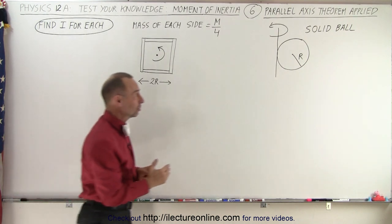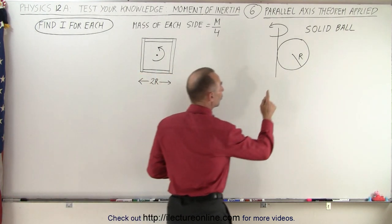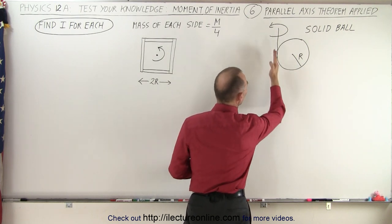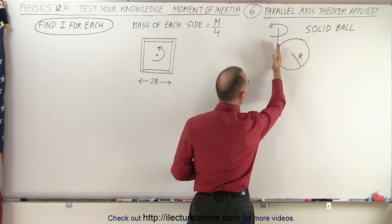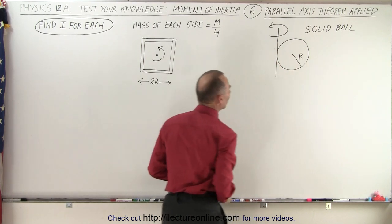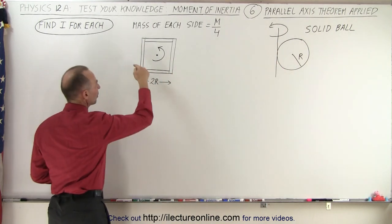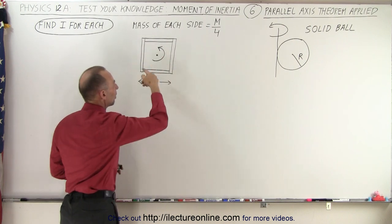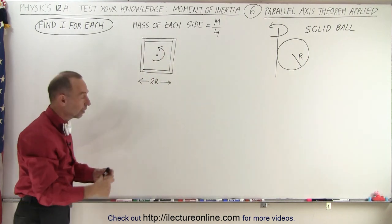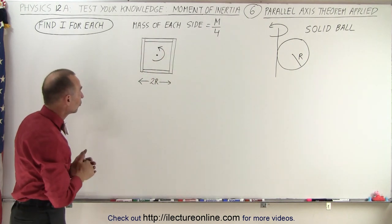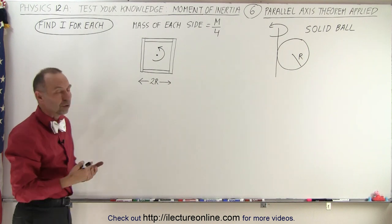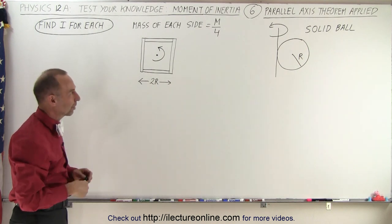What we're trying to do here is find the moment of inertia of the ball rotating or revolving around an axis that goes right to the side of the ball, and here we want to rotate this about a point right in the middle of that open box made from the long thin strips. We're going to do that by using the parallel axis theorem.